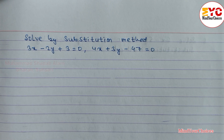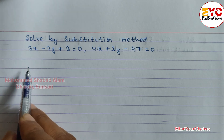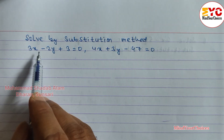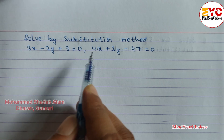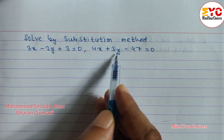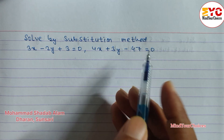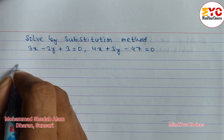Hello everyone. Today we are going to solve the linear equation by substitution method. We have the equations: 3x minus 2y plus 3 is equal to 0, and 4x plus 3y minus 47 is equal to 0. We have to solve by substitution method.